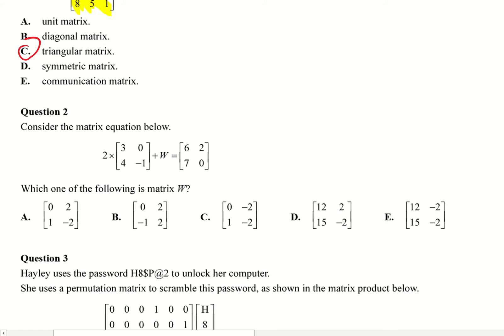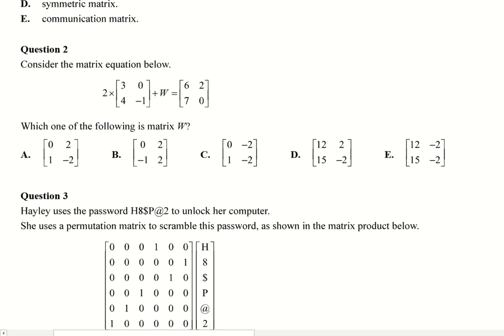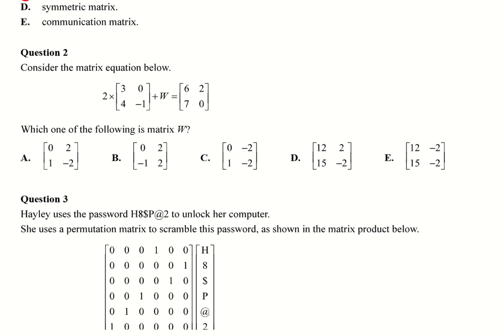So consider the matrix equation below. We need to work out what W is. So what we need to look at here is it's an addition, so basically whatever is here is going to be a 2x2 matrix, and whatever is in these spots has to, when I add that, has to add up to 6, 2, 7, 0. So let's work out what this one would be here. So here I'd have 2 times, remember it's a scalar multiplication, so it would be 6, it would be 8, it would be 0, and it would be minus 2.